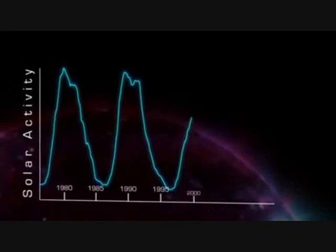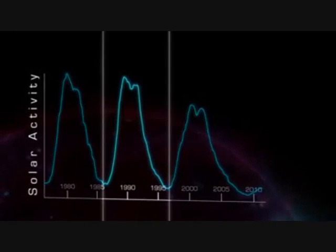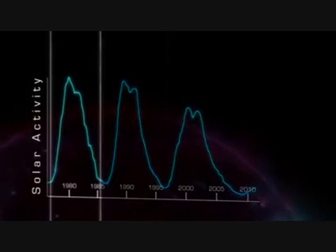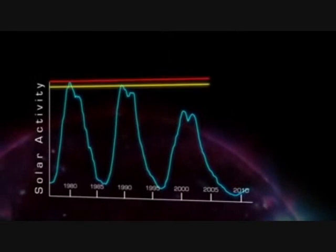This pattern is called the sunspot cycle, and a single cycle lasts for about 11 years, although it can be as short as 8 or as long as 14, and it can vary dramatically in intensity.